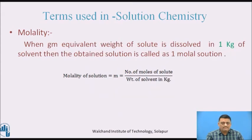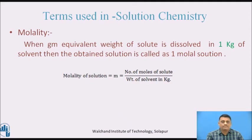Similarly, one more term is molality. The difference between molarity and molality is that in molarity we take the solvent as 1 litre by volume, whereas in molality, instead of volume, we take the mass of solvent as 1 kg — that is the only difference. When a gram equivalent weight of solute is dissolved in 1 kg of solvent, the obtained solution is called a 1 molal solution. Molality = number of moles of solute / weight of solvent in kg.